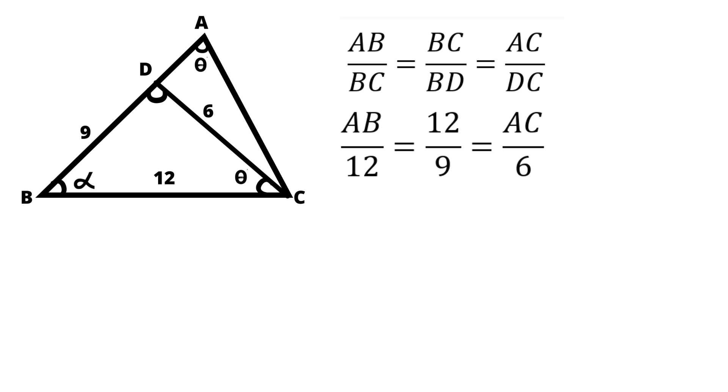Now, let's consider AB by 12 equals 12 by 9. We have AB equals 12 times 12 by 9 which equals 16 centimeter.